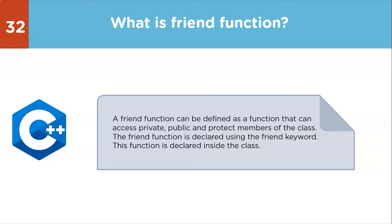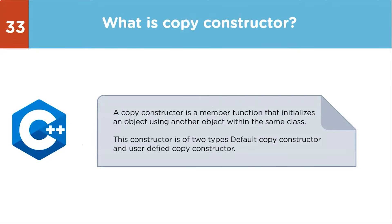Next question: what is a copy constructor? A copy constructor is a member function that initializes an object using another object within the same class. There are two types: default copy constructor and user-defined copy constructor.